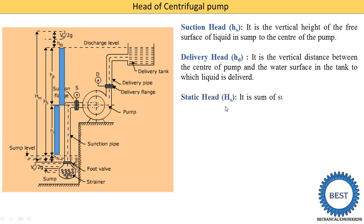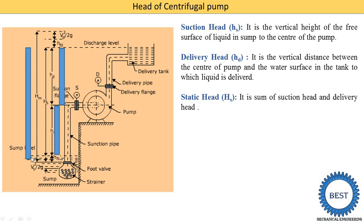Next is the static head. The static head is denoted as capital HS. Static head is the sum of suction head and delivery head — capital HS equals HS plus HD. So from the water level in the sump to the water level in the tank, that total height is known as the static head.